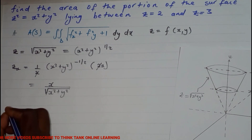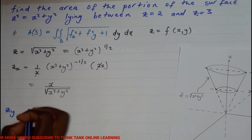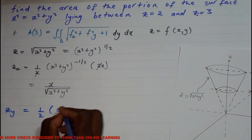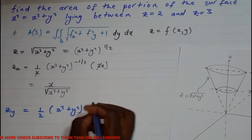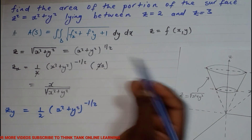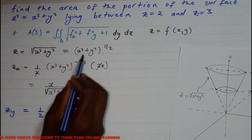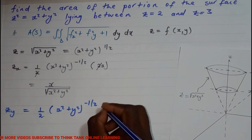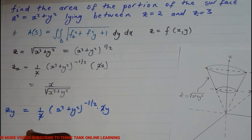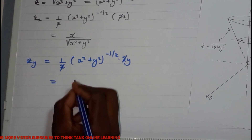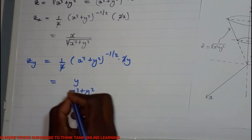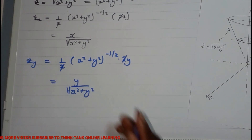Now for z_y: it equals (1/2)(x² + y²)^(−1/2) multiplied by the inner derivative 2y. This simplifies to y over √(x² + y²).